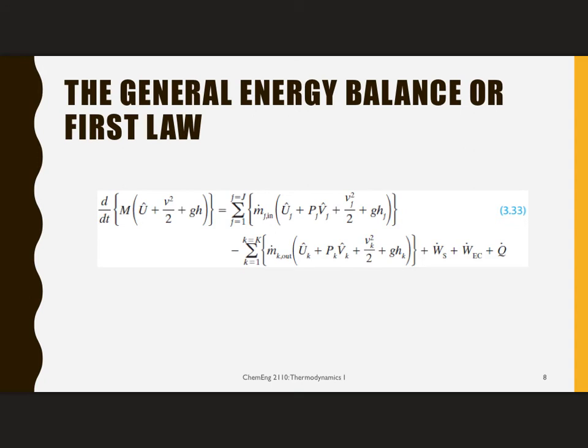Now, when I put all of these things together, remember I have the accumulation is the input minus the output plus all that generation. But again, if we don't have reactions, I'm not going to have that part of it. So it's in minus out. Anything that comes in or out of the system. So the accumulation is d/dt of my total energy, so mass times U plus one half V squared plus gh. In and out, I can carry that energy in and out by flowing streams. So that's what this first grouping here is.